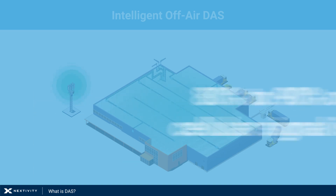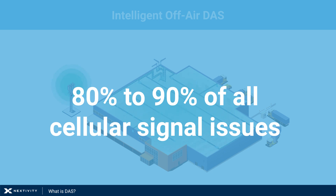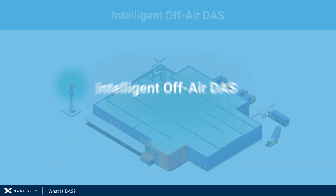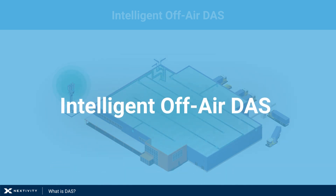Approximately 80 to 90 percent of all cellular signal issues can be fixed with intelligent off-air DAS.